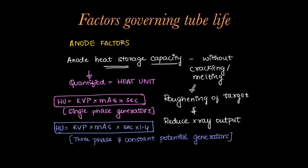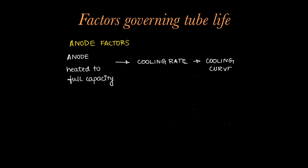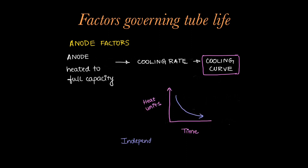Speaking in general, the average heat storage capacity of a typical anode will be 25 kilo heat units. Once the anode is heated up to its full capacity, it has to be cooled down before the next exposure. The cooling rate is given by a cooling curve which is drawn as heat units against time. This is independent of anode rotation time.